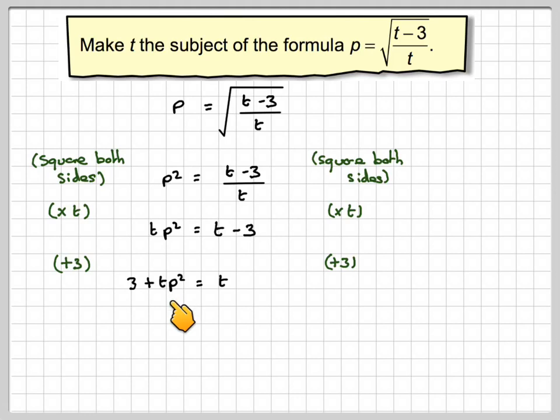And then I'm going to subtract tp squared from both sides. And doing it that way around will avoid any nasty minus sign. So I'm going to have that 3 is equal to t minus tp squared.